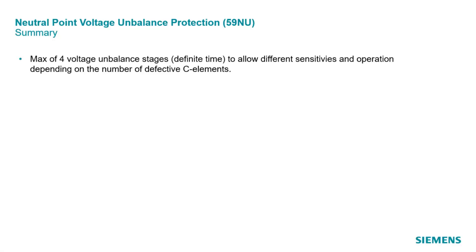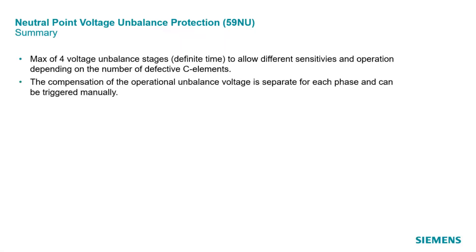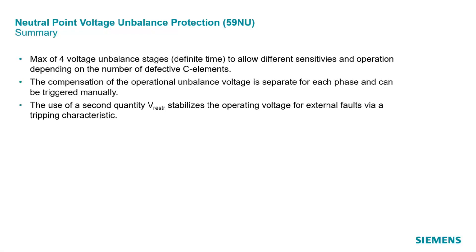A maximum of four definite time voltage unbalanced stages are implemented to allow different sensitivities and reactions depending on the number of defective capacitive elements. The compensation of the operational unbalanced voltage is separate for each phase and can be triggered manually. The use of a second quantity V-restrained stabilizes the operating voltage for external faults via a tripping characteristic. For the detection of very small operational voltages, ZipROTEC 5 provides a very high sensitivity of 0.1 percent of the nominal voltage of the capacitor bank.